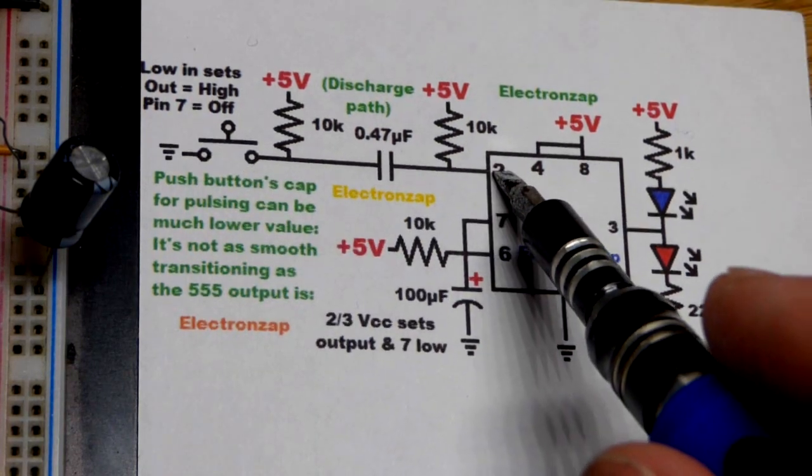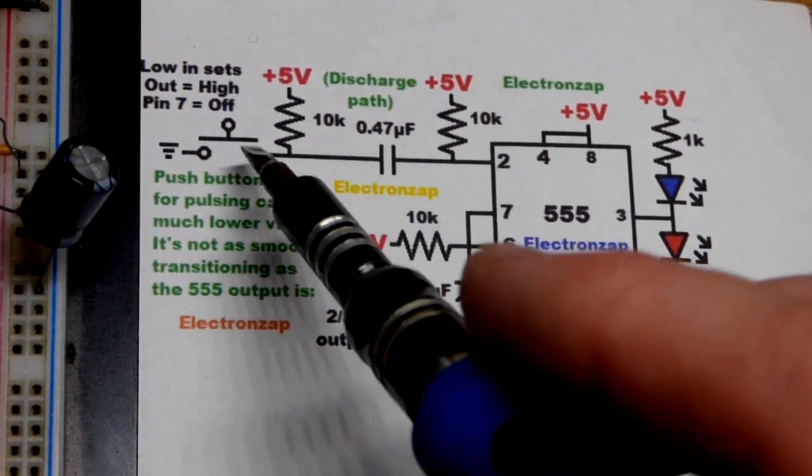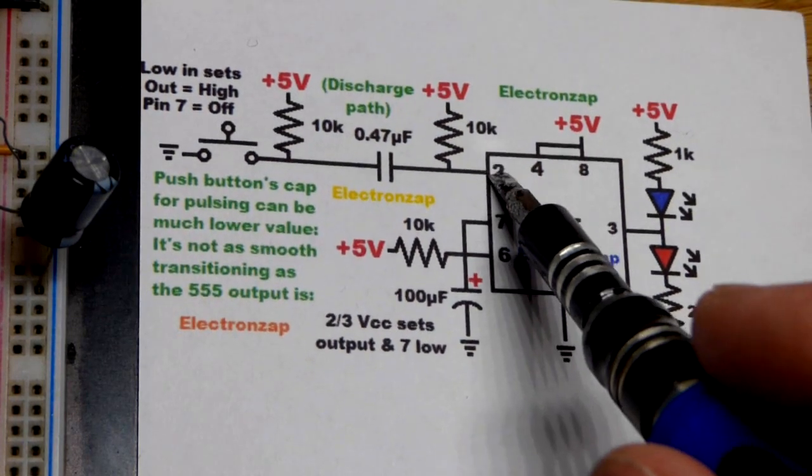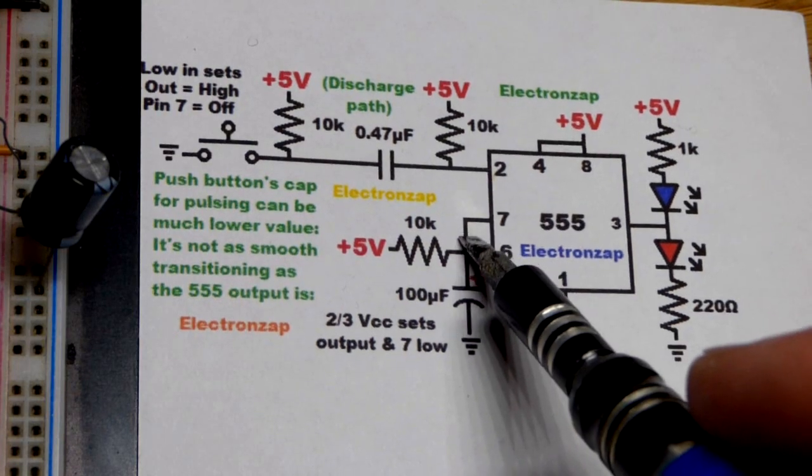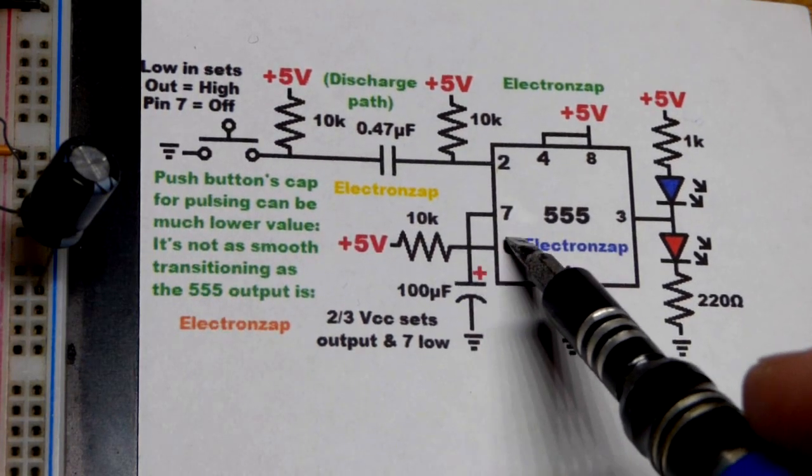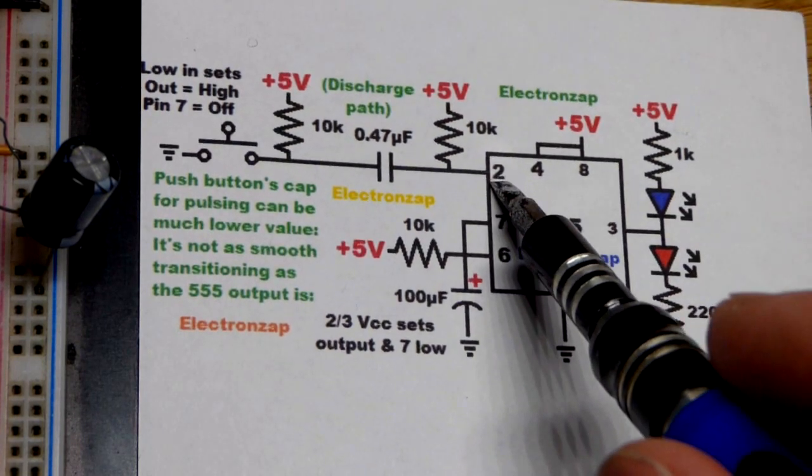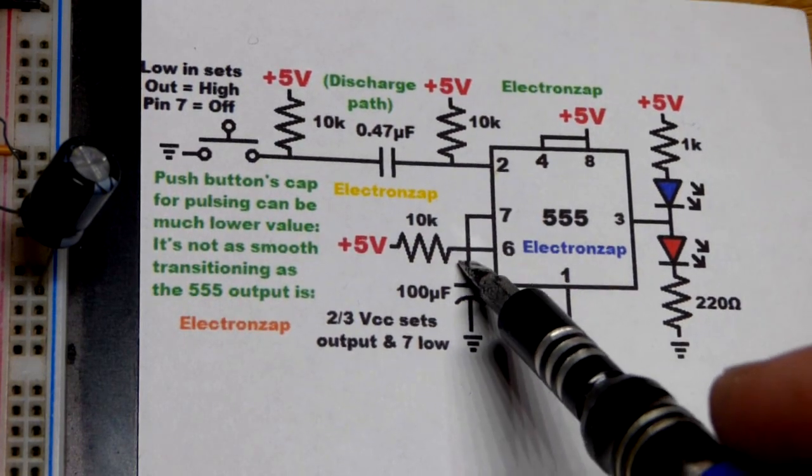Now if we hold the switch too long, as we saw, pin number 2, if it keeps seeing that low input right there, overpowers pin number 6. So if pin number 2 is held low, then pin number 6 will never tell 7 to discharge and go to ground. So we have to get it back to low before that timing gets up to two thirds of the supply voltage.